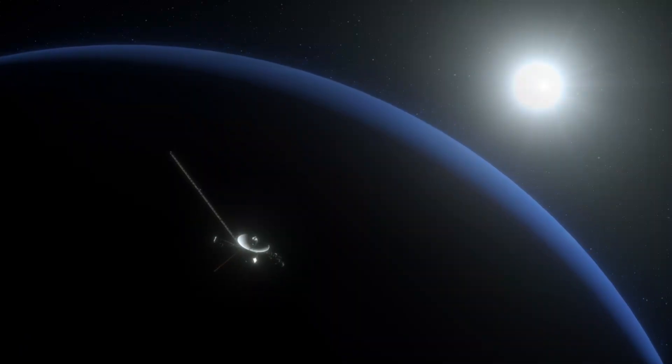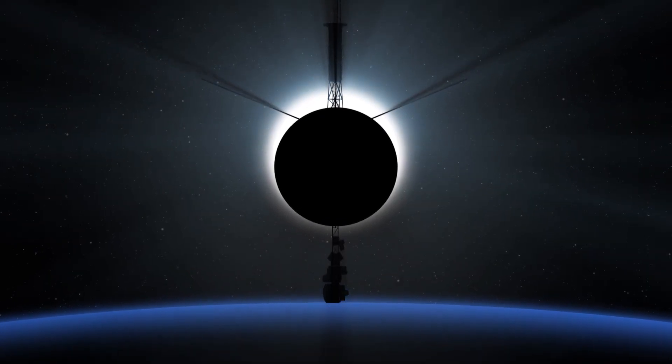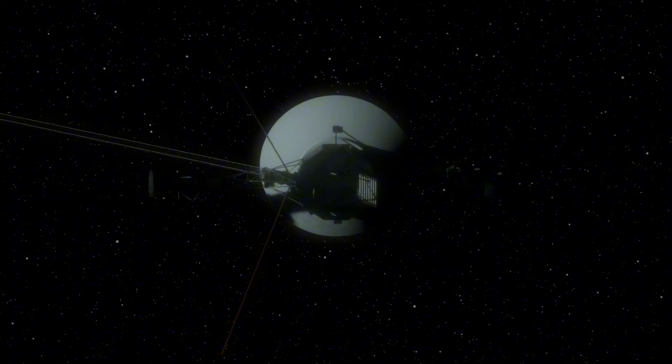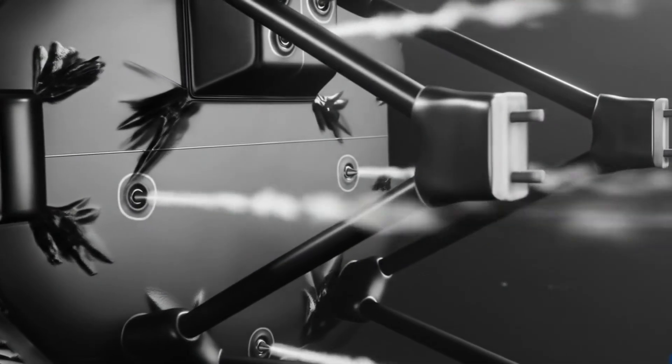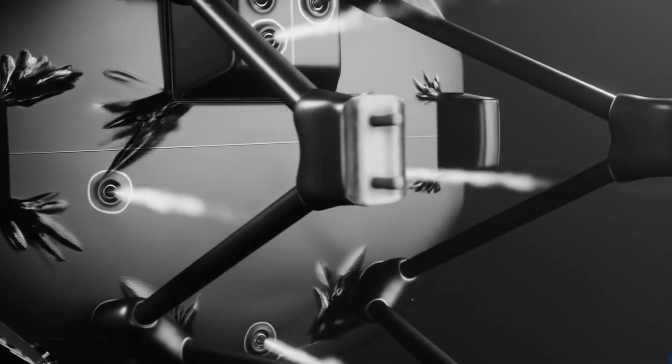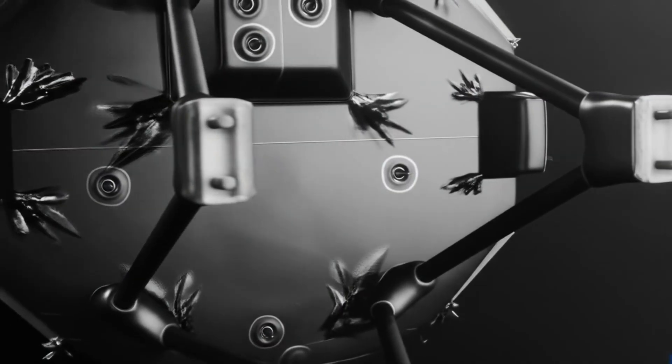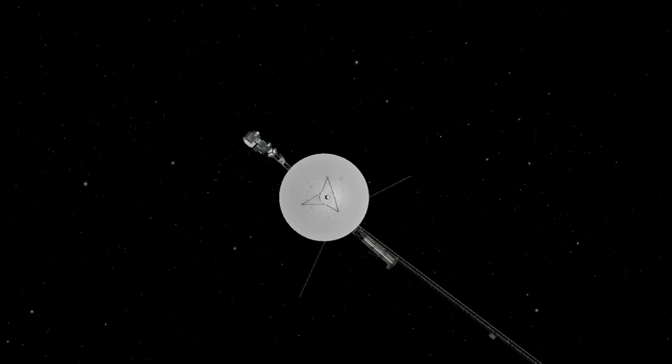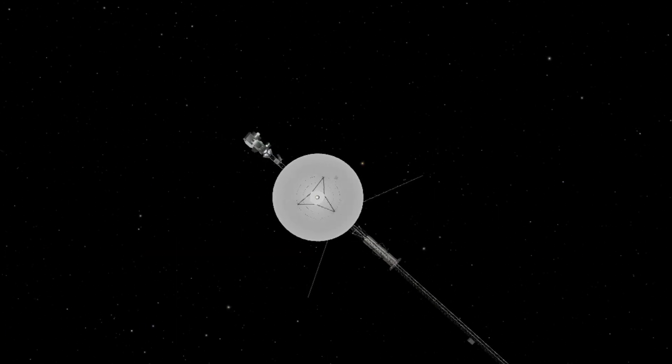Voyager 1 also became a lesson in long-term engineering. In 2017, NASA engineers successfully fired backup thrusters that had been dormant for 37 years from 24 billion kilometers away, extending the probe's life by several more years. This was like achieving the impossible.